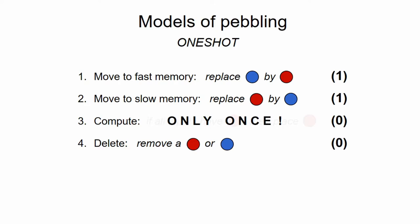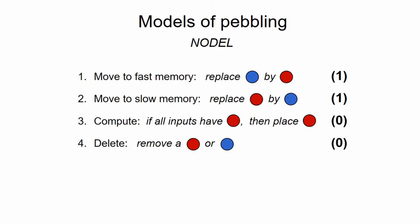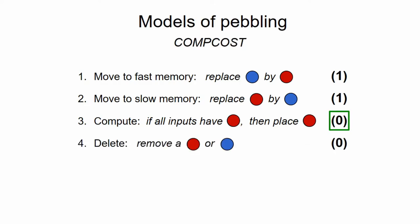Or another variant is the so-called nodal model, where the deletion operation is not allowed, meaning that if you run out of red pebbles, you will have to save your values in the slow memory. And we believe the most realistic variant is the so-called compost model, where instead of assigning a cost of zero to computations, we assign a small constant epsilon cost to them, which is realistic in the sense that computations now do incur some cost, even if this cost is much less than the cost of transfer operations.